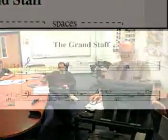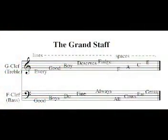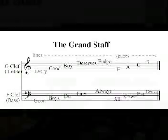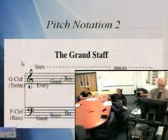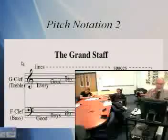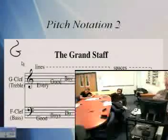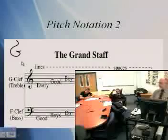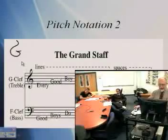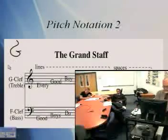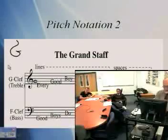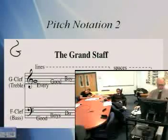Wesley needs a review of the grand staff. How many of you know the difference between a treble staff and a bass staff? The treble staff was originally a G — it's called a G clef because in the old days it looked like a little G. The little circle here is around the line G; that's why it's called the G clef. It's the clef that the treble instruments use.